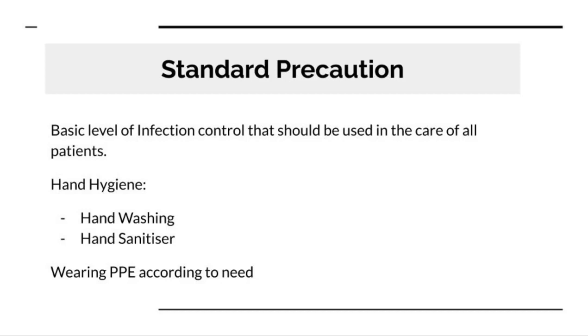First of all, standard precaution. Standard precaution is the basic level of precautions that we use to take care of all patients. It is the basic level of infection control practices that everyone should use in the hospital. Standard precaution includes hand hygiene and wearing PPE as per the need. Hand hygiene includes hand washing and using hand sanitizer.